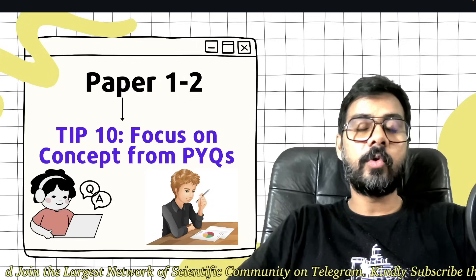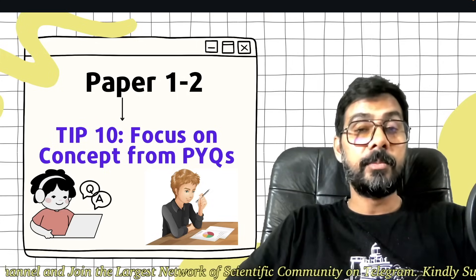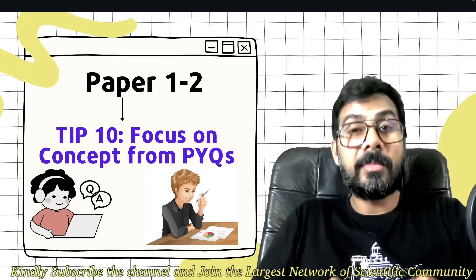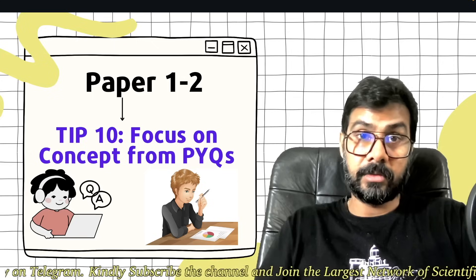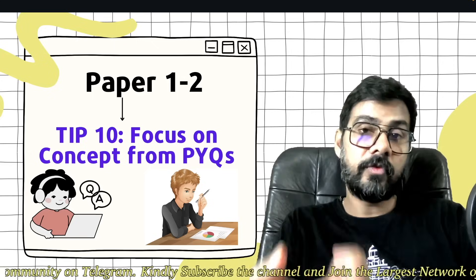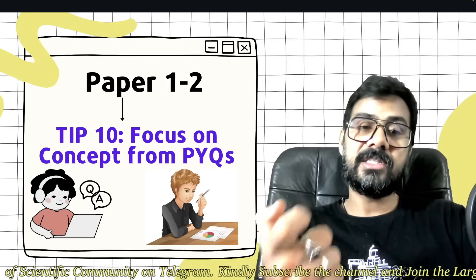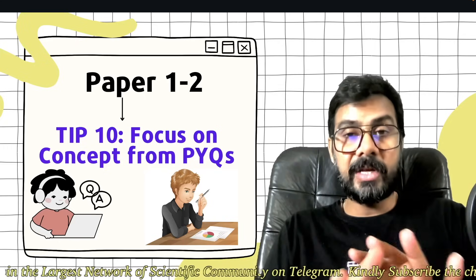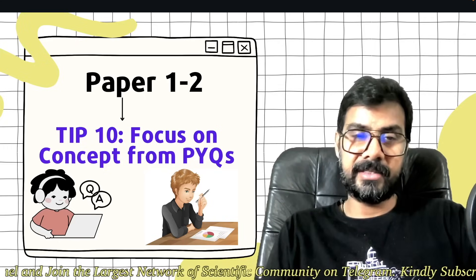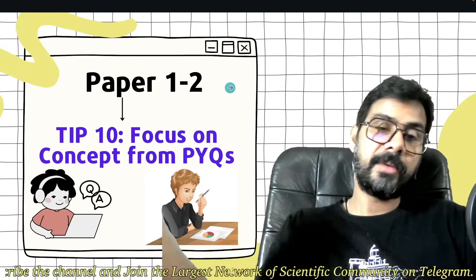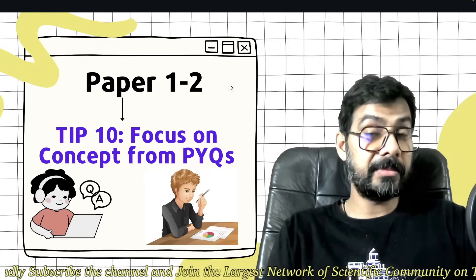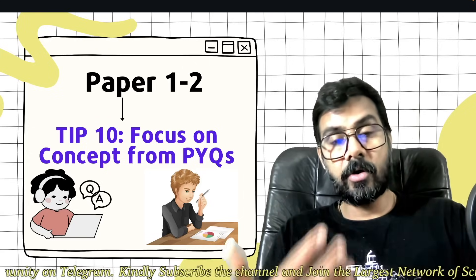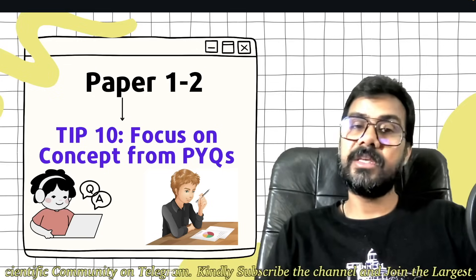Tip 10: Focus on concepts from previous year questions. The concepts we discussed from previous year questions - mug up those concepts, not the questions themselves. Which formula is applied and why - focus on these concepts from previous year questions. You will get huge confidence in paper 1 as well as paper 2. Both papers will give confidence because subject topics don't change, just the concept and the way of asking the question will change in every paper.